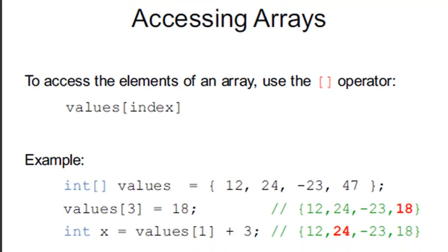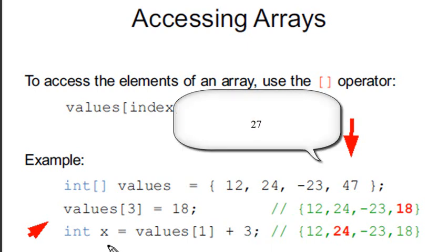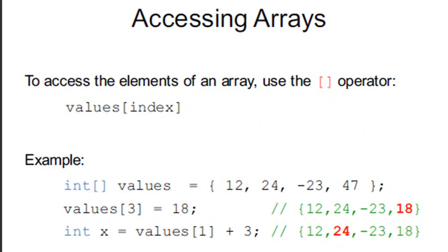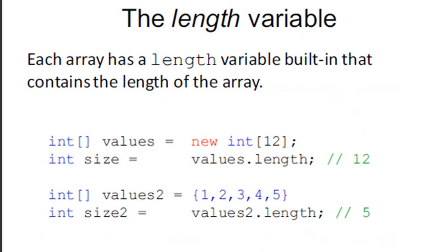Accessing arrays. So in this particular example, I'm going to initialize my array with the values 12, 24, minus 23, and 47. I'm actually going to set the value of array 3. Now, which one am I setting to 18? The last value because that's Index 3. And so it changes the array from 12, 24, minus 23, 47 to 12, 24, minus 23, 18. I can also say, hey, let x equal the value 1 plus 3. Now, what is value 1? Well, this is value 0. This is value 1 right here. So I'm going to take value 24, I'm adding 3 to it. And what would x be equal to? Yeah, these are easy questions. And if you look at that, the answer should be 27.